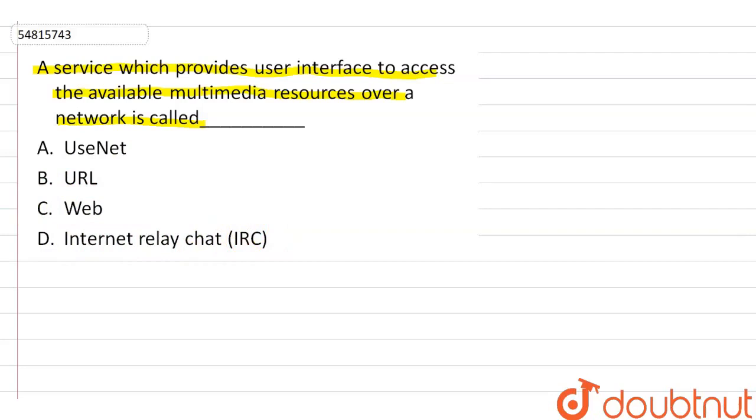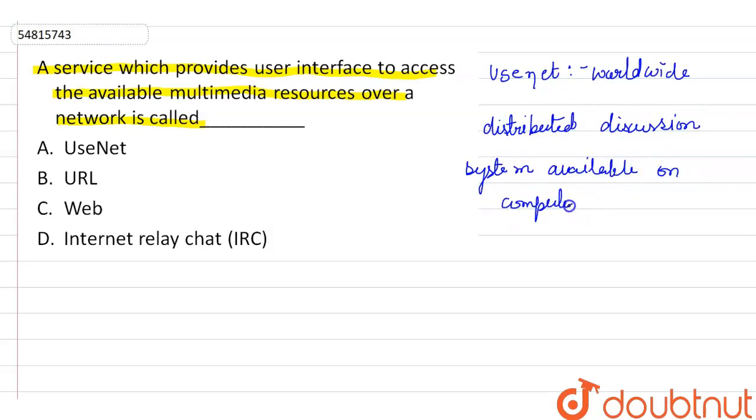So, we all know how many terms there are. First of all, let's talk about UseNet. UseNet is basically a worldwide distribution or distributed discussion system available on computer. This is a worldwide distribution discussion system which is available on computer. Anybody can access it.